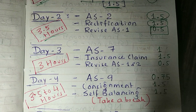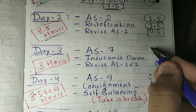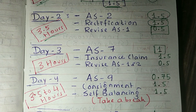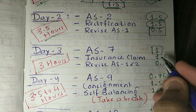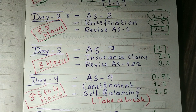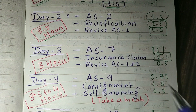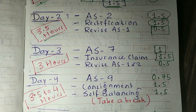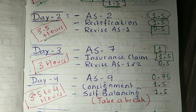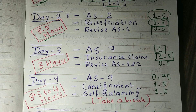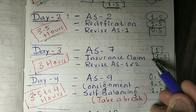On Day 3, you have to cover Accounting Standard 7, which will take 1 hour. After that, study the chapter on Insurance Claims — specifically the two methods: Loss of Profit and Loss of Stock — which will take 1.5 hours. Since the online exam is almost certain, you don't need to make elaborate formats. You can make a format for conceptual clarity, but the rest of the questions can be solved on rough paper. This takes 1.5 hours.